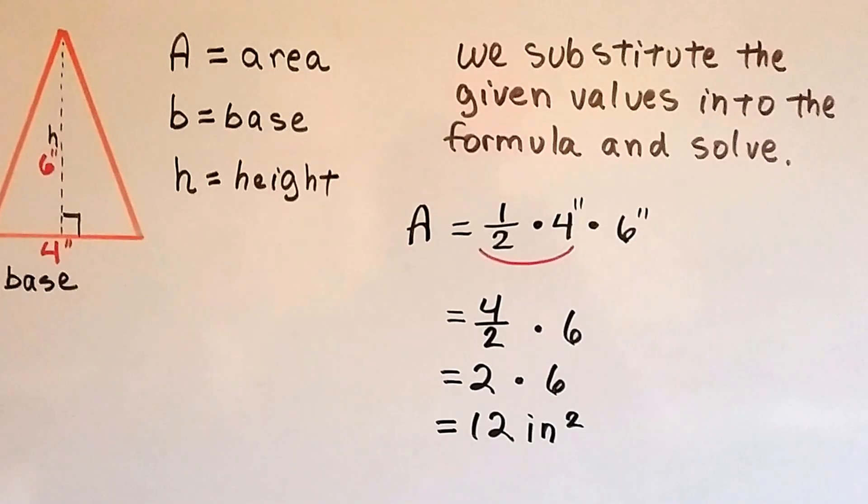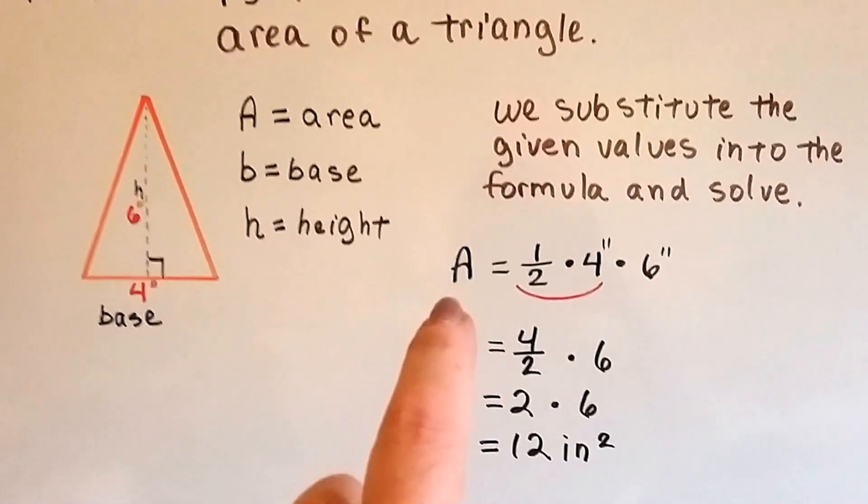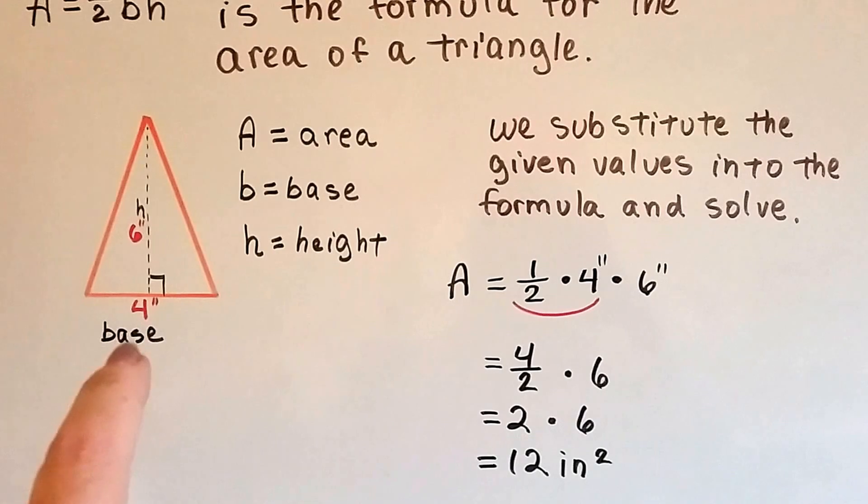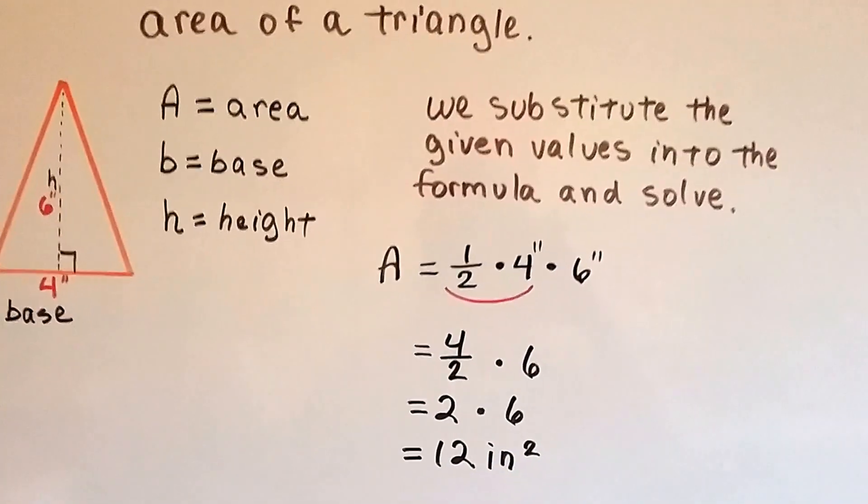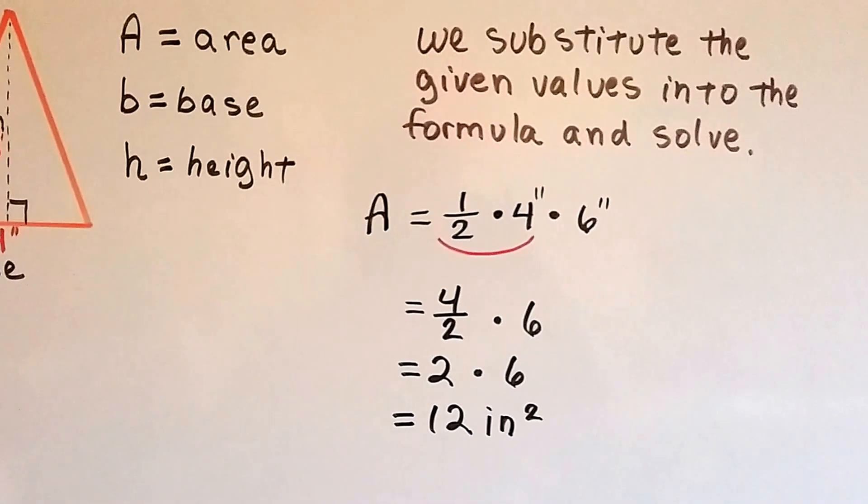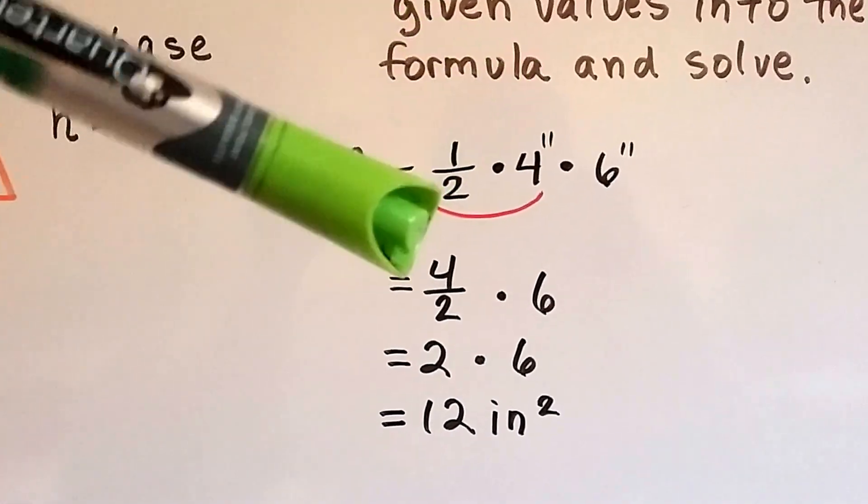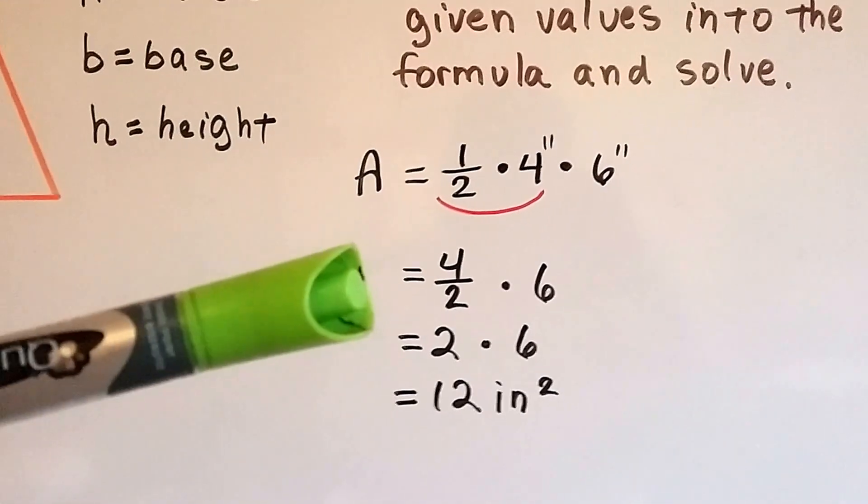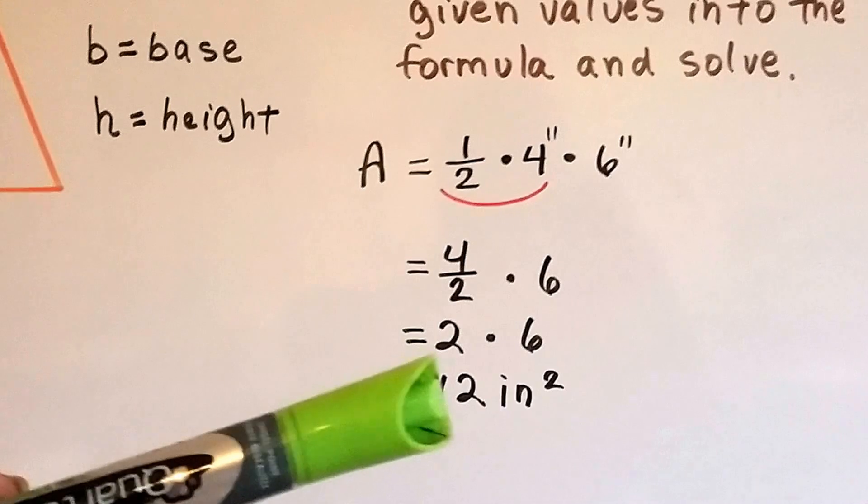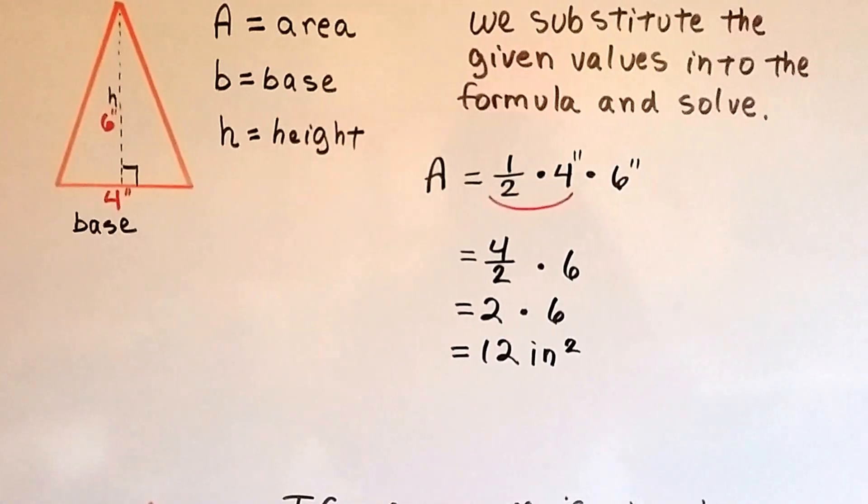We substitute the given values into the formula and we solve it. So for A equals half BH, the base is 4 inches, the height is 6 inches. And we get half times 4 inches times 6 inches. A half of 4 is 2, that's 4 over 2 if we multiply it. And 4 over 2 is 2 times 6 is 12 inches squared. Remember, because we're doing area, it's squared.